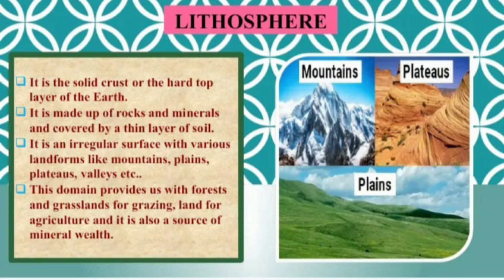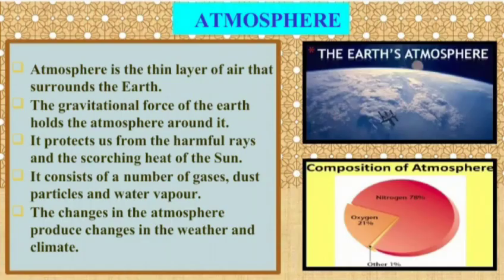The lithosphere is the solid crust or the hard top layer of the earth. It is made up of rocks and minerals and covered by a thin layer of soil. It is an irregular surface with various landforms like mountains, plains, and valleys. These domains provide us with forests and grassland for grazing, land for agriculture, and it is also a source of mineral wealth.